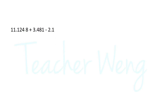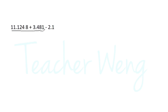For our next example, we have eleven and one thousand two hundred forty-eight ten-thousandths, plus three and four hundred eighty-one ten-thousandths, minus two and one tenth. The first thing to do is to add the first two numbers and then subtract the last one from the result.